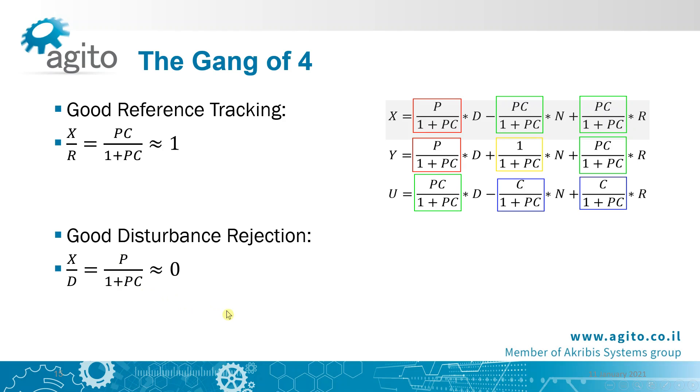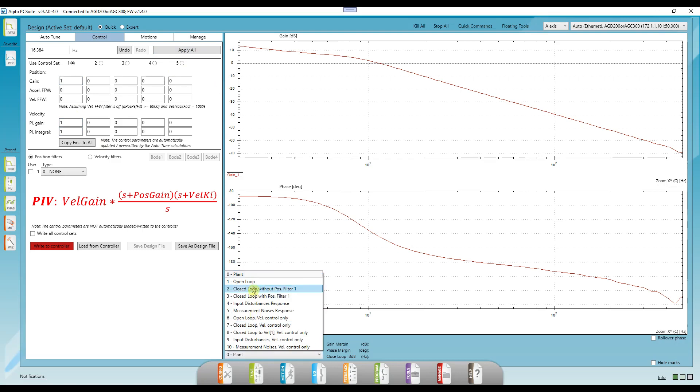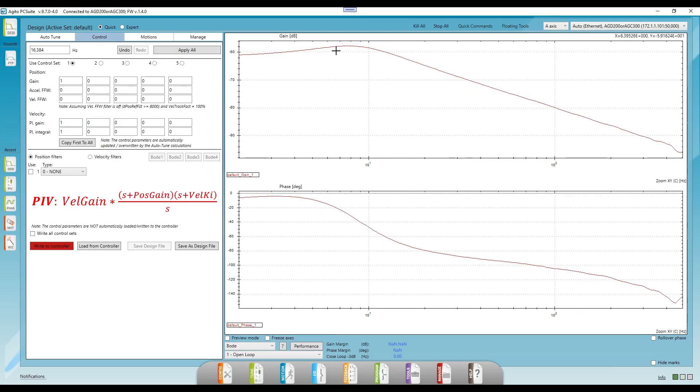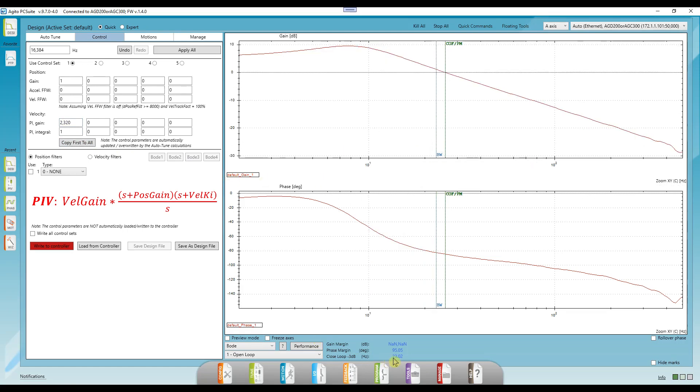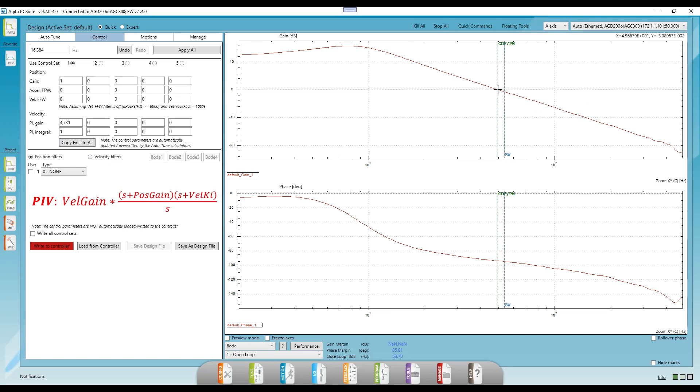I'm going to aim for a bandwidth of around 50 Hz, 50 degrees phase margin, and 6 dB gain margin. Let's start tuning. Let's start with all PIV parameters as 1s, and go to the open loop plot. We see that I don't even have a crossover frequency. So let's first increase the gain, until my crossover frequency meets my desired bandwidth.